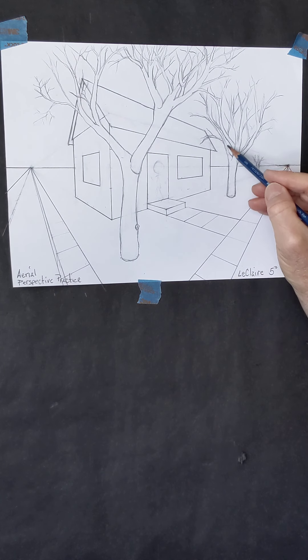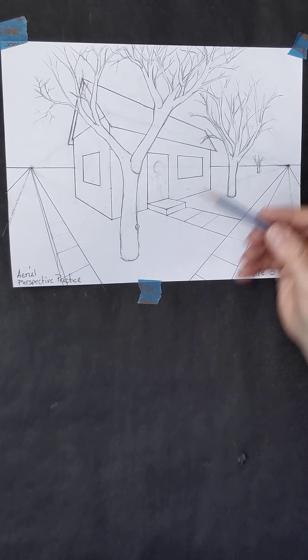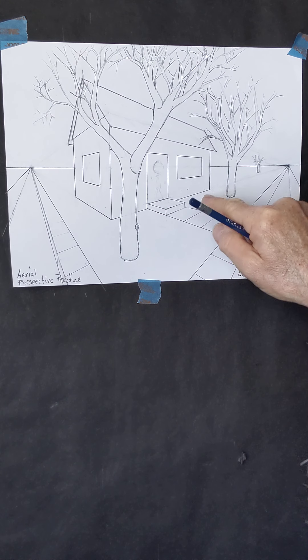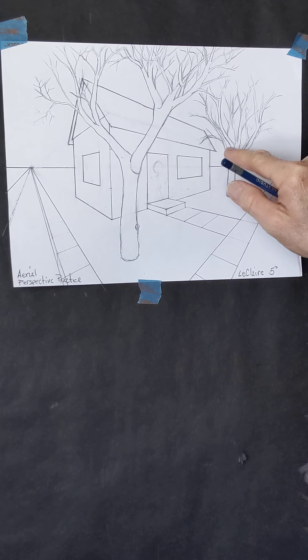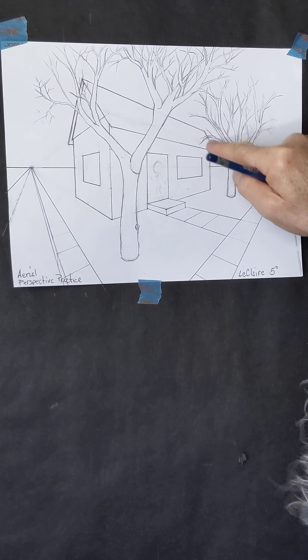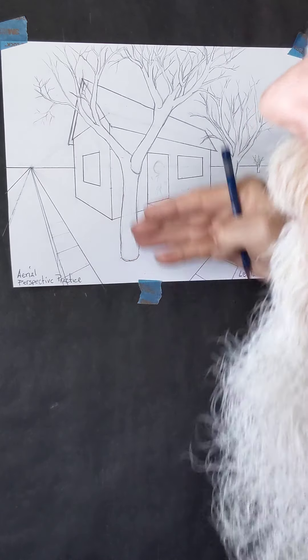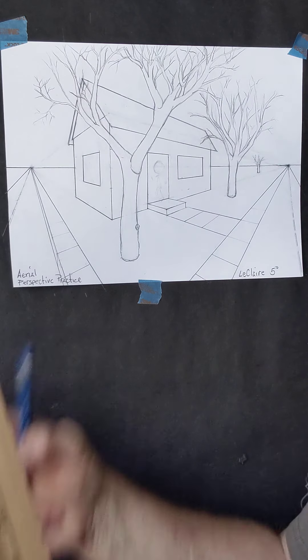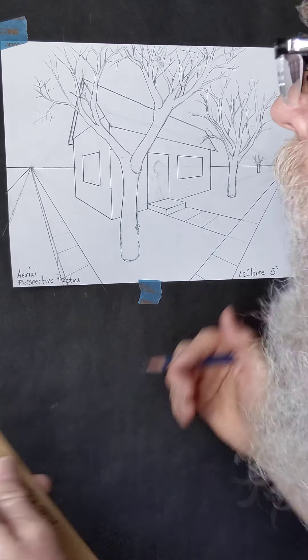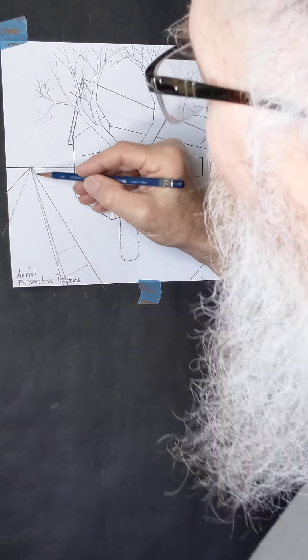And I redefined a little bit—this tree is overlapping this corner of the house because this bottom of the tree is lower than that corner of the house. That means it's closer to us than the top of the house is there. So I can bring some of the branches of this tree in front of that part of the house to show that it's a little closer.